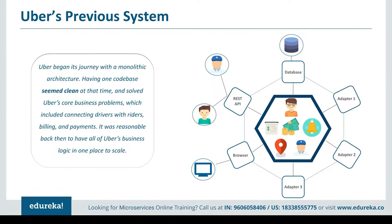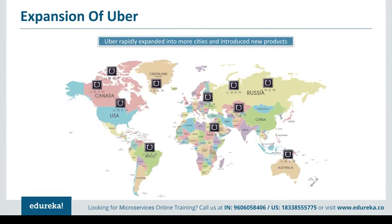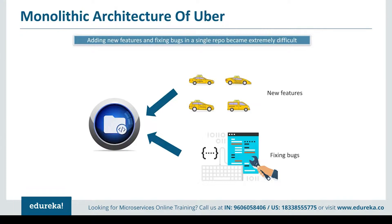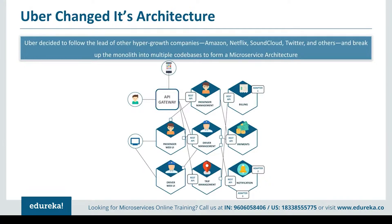Having one codebase solved Uber's core business problems including connecting drivers with riders, billings and payments. But as Uber started expanding worldwide into many more cities, it continuously faced the problem of scalability and continuous integration. Developers could not continuously build, test, deploy and release the software frequently as Uber expanded city-wise. Also, adding new features and fixing bugs in a single repository became extremely difficult. So, Uber decided to follow the lead of hyper-growth companies like Amazon, Netflix, SoundCloud and Twitter, and broke down its monolithic framework into multiple code bases to form a microservice architecture.